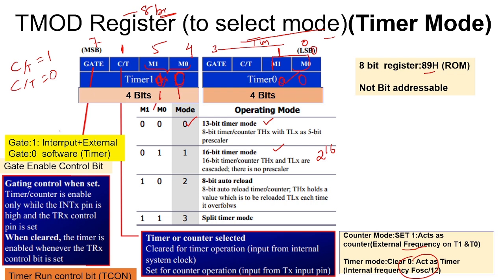Another important bit is the Gate — a gate enable control bit. If Gate is 0, it will work as an internal timer, that is a software timer. If Gate is 1, it will work based on an external interrupt signal.